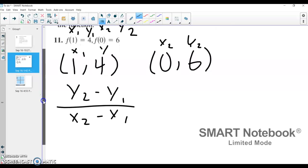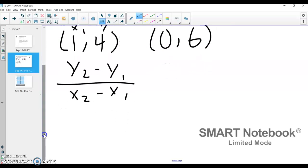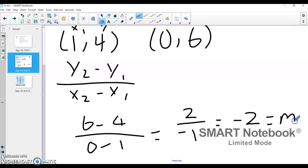So I plug in, and I get 6 minus 4 on top, and I get 0 minus 1 on bottom. And when I do my subtraction, I get 2 over a negative 1, which gives me negative 2, and that is my slope, which I call m.